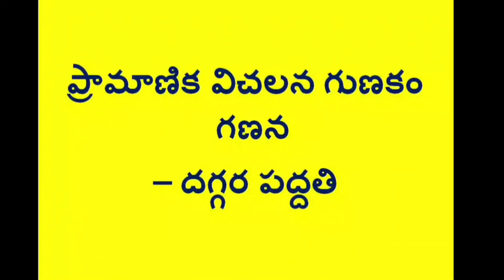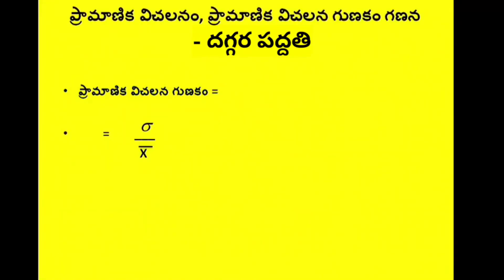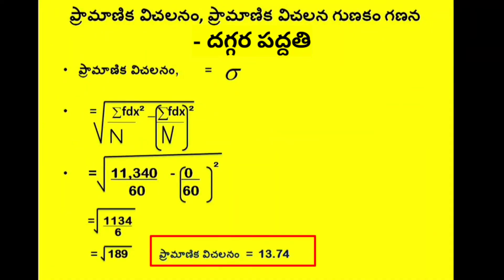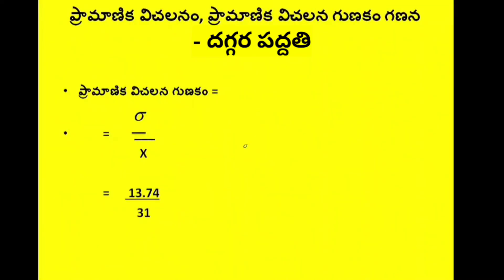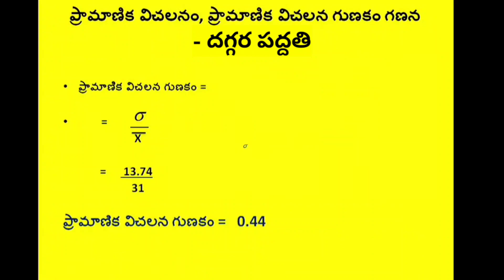So the coefficient of standard deviation using the shortcut method: sigma divided by mean equals 13.74 divided by 31, which equals 0.44.